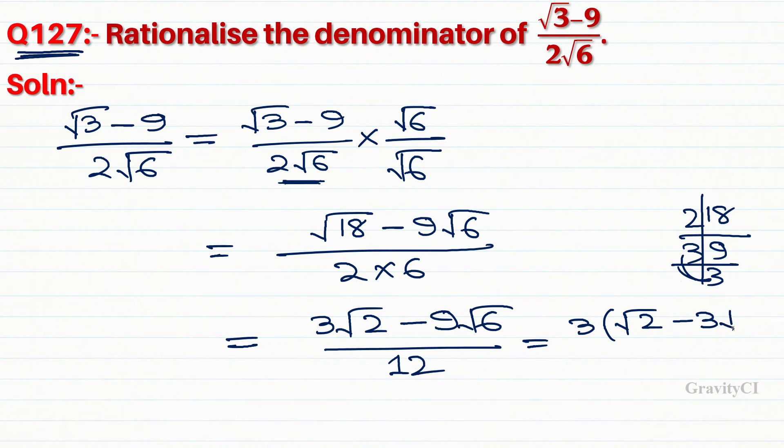Canceling 3, the denominator becomes 4. So the answer is (√2 minus 3√6)/4.